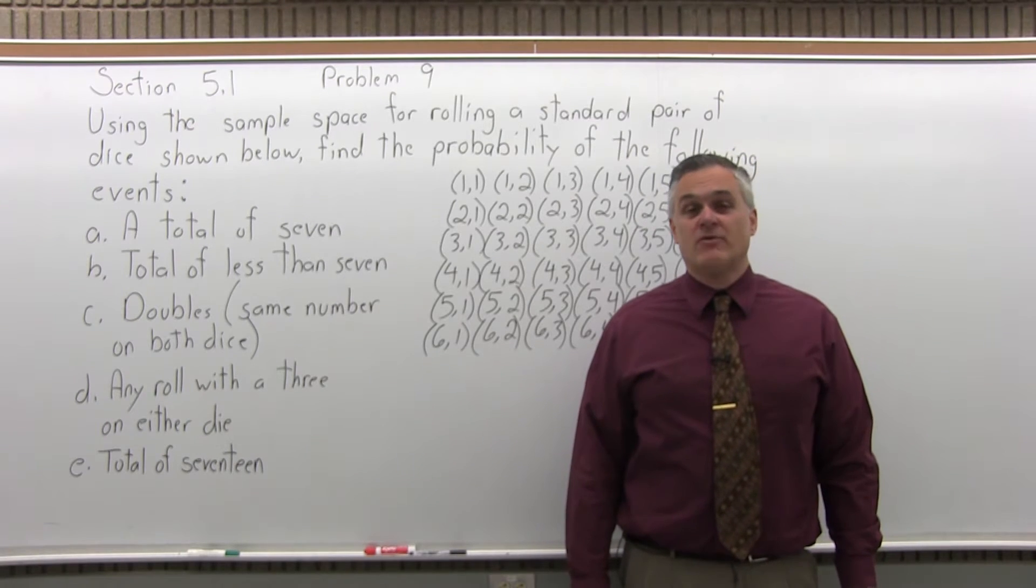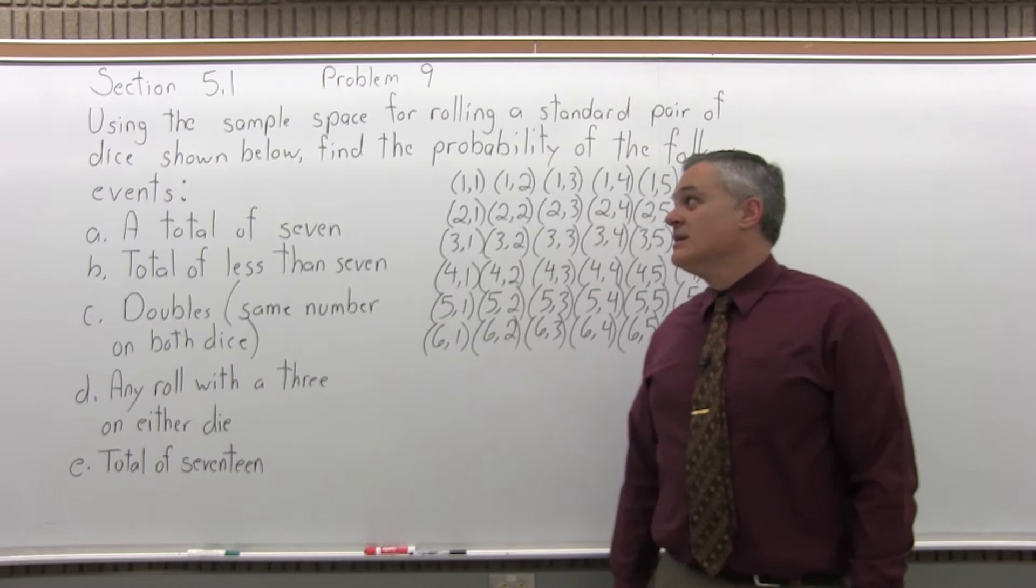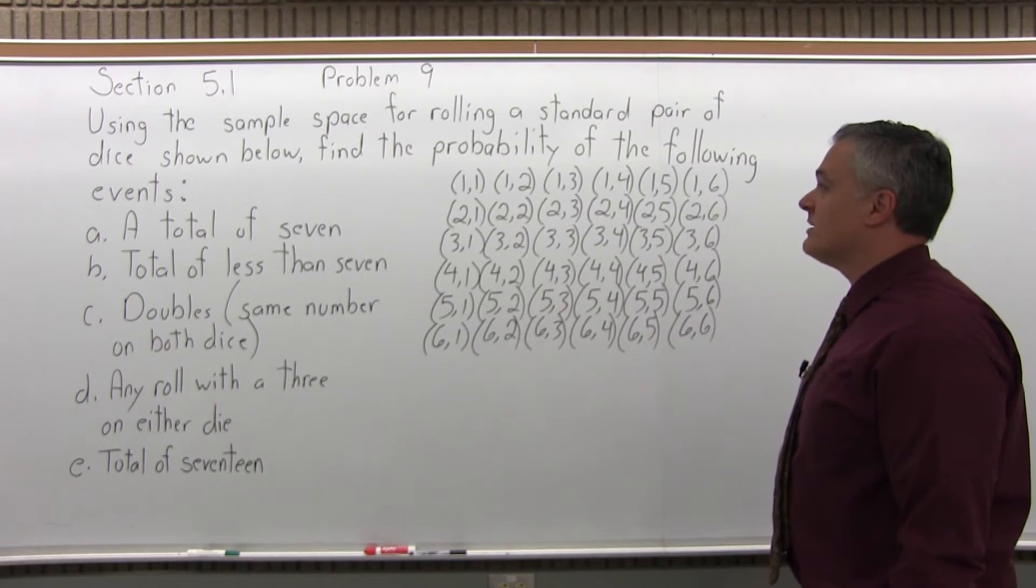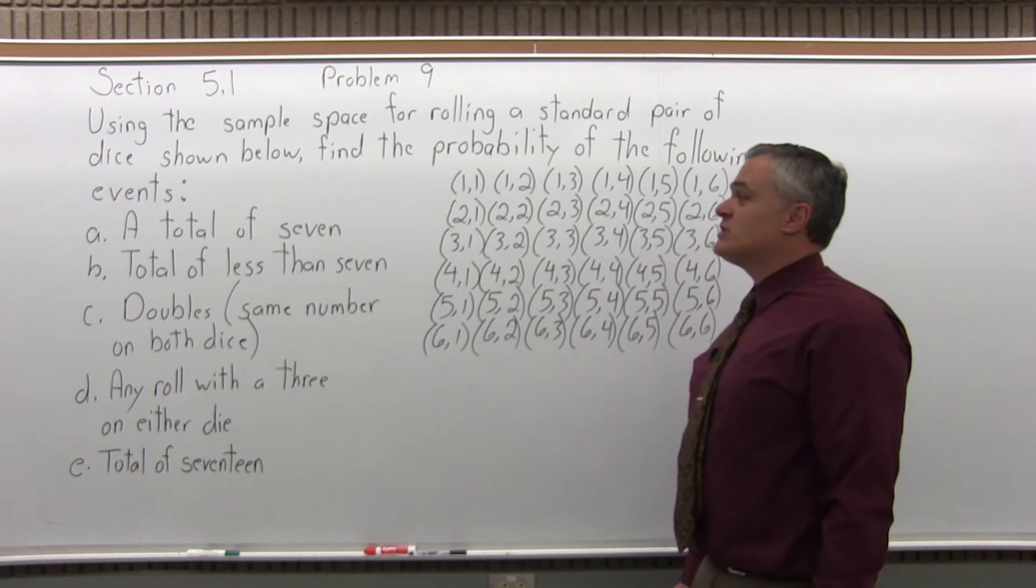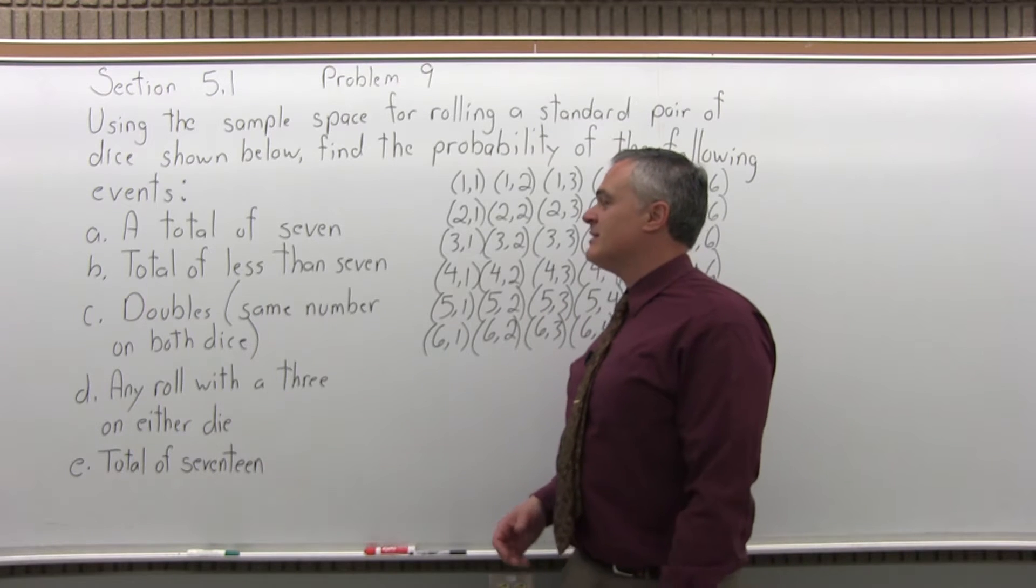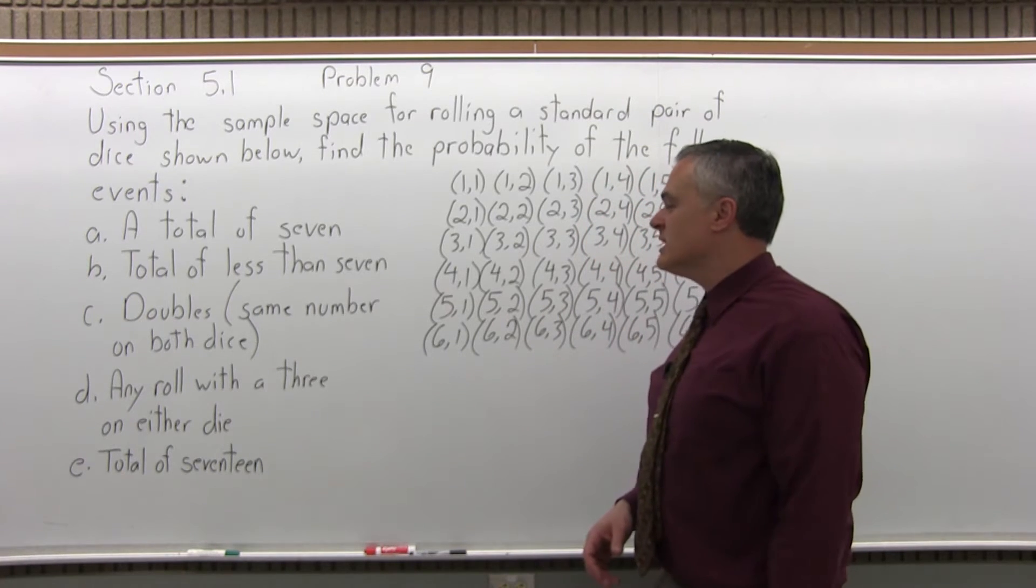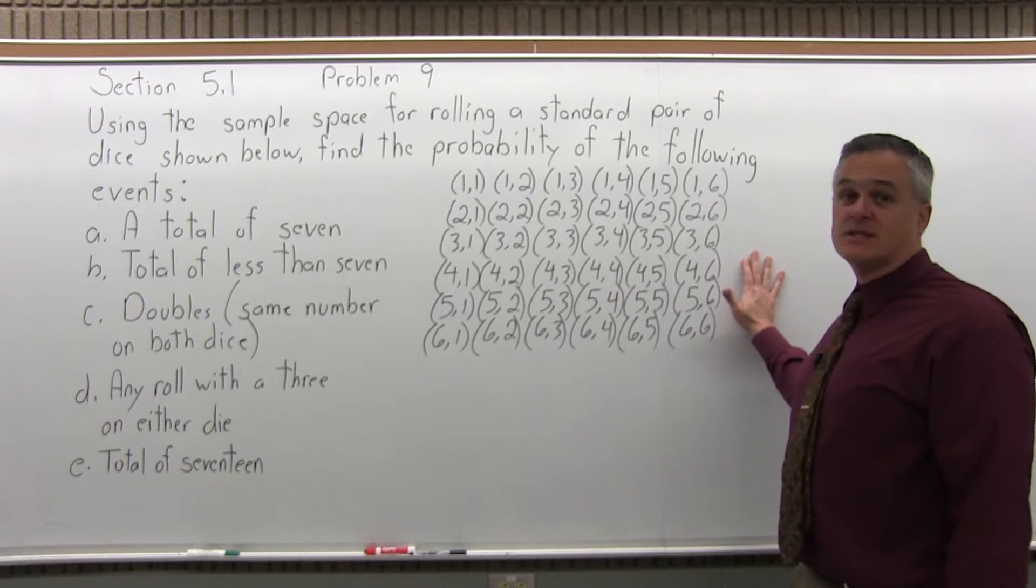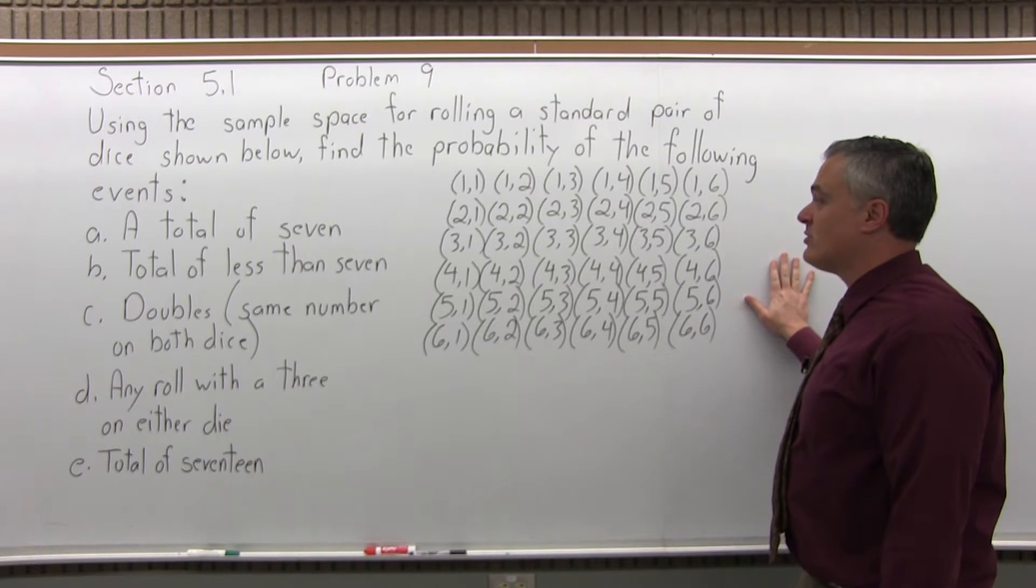This is Section 5.1, Problem 9. It says, using the sample space for rolling a standard pair of dice shown below, find the probability of the following events. So if you look, this is the sample space. This is the list of every possible outcome you can have when you roll a pair of dice.